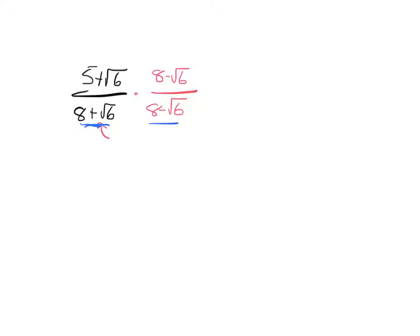All right, so when we multiply the denominators together, because we're multiplying straight across, we're going to employ this fact right here: a plus b times a minus b equals a squared minus b squared.